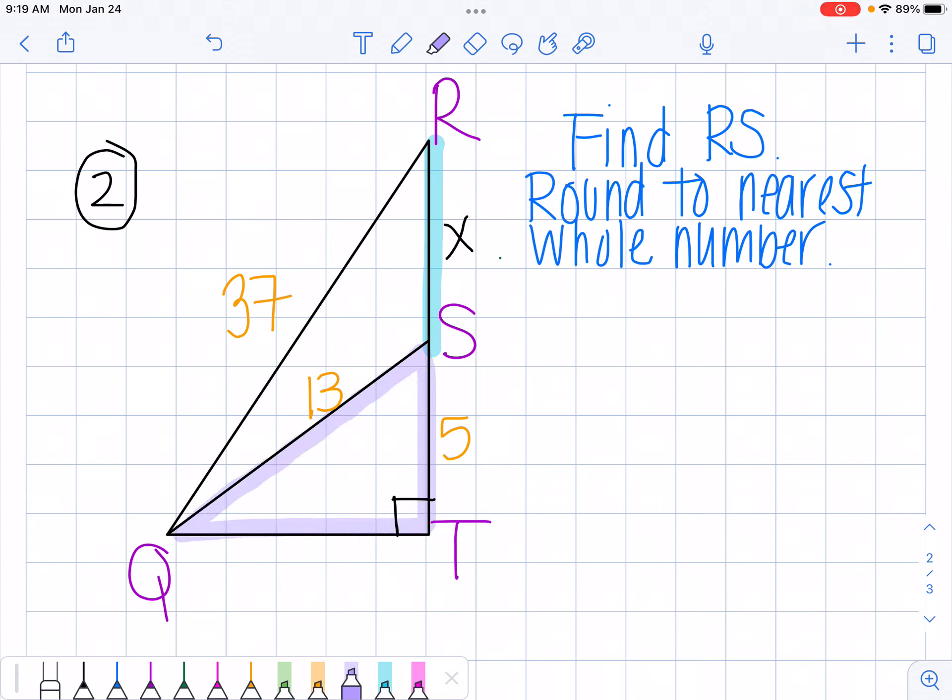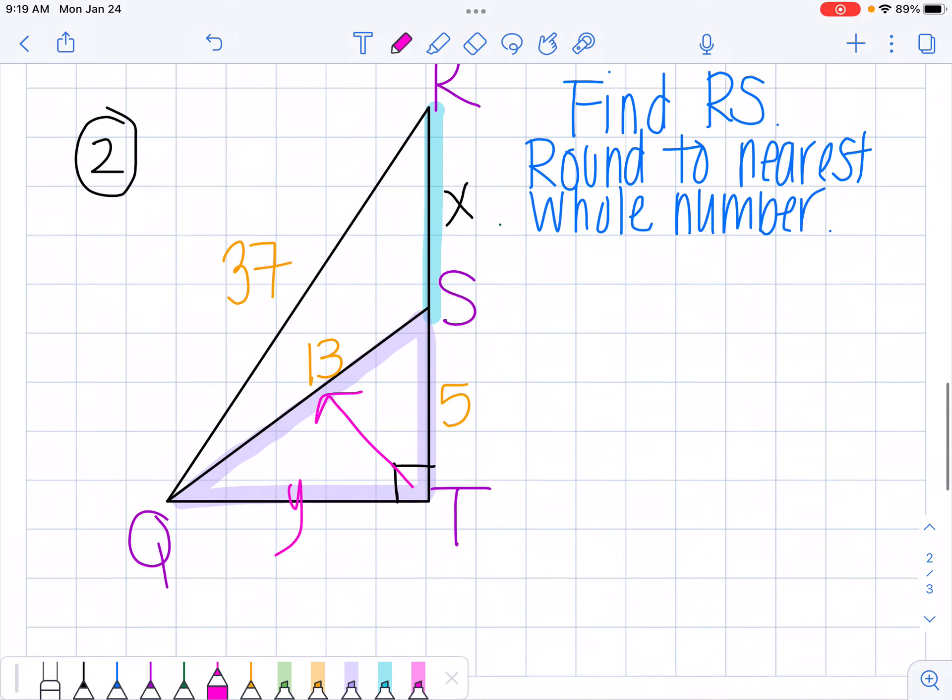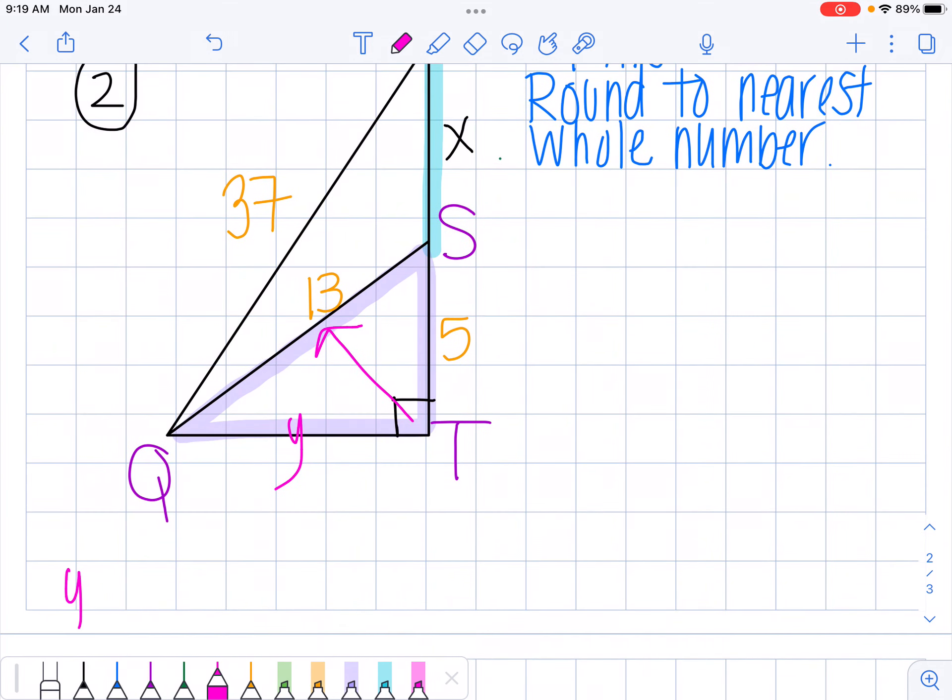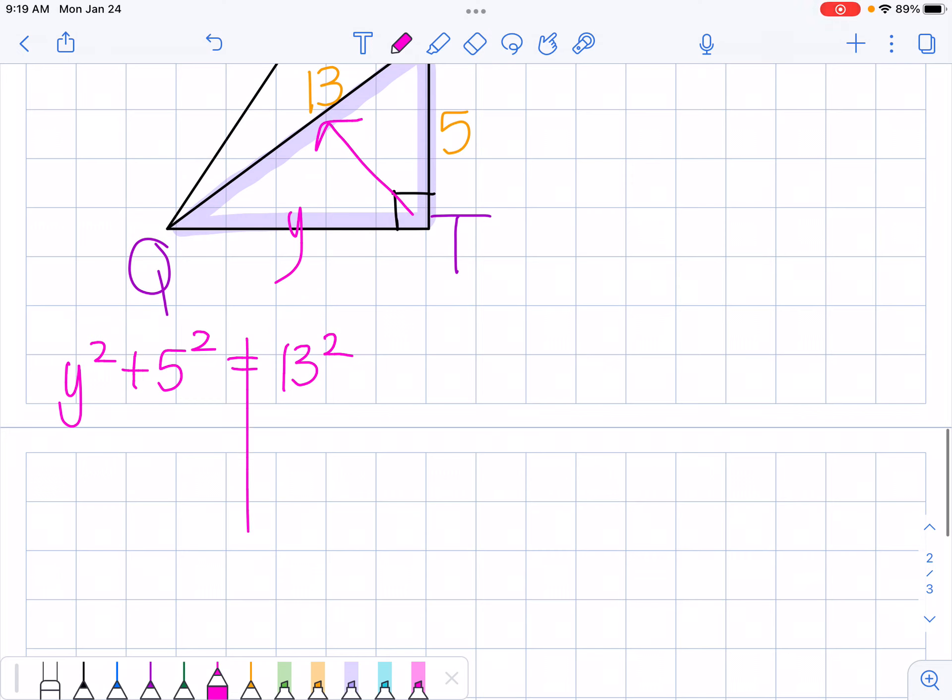But before I do that, I'm just going to start with my right triangle. Here's one that has two sides, and I'm going to call this a y just so I can find my side. And across from my 90 degrees is my hypotenuse, which is 13. So I'm going to set this up and say y squared plus 5 squared is equal to 13 squared. Draw my line down the middle.